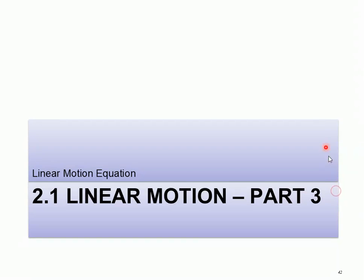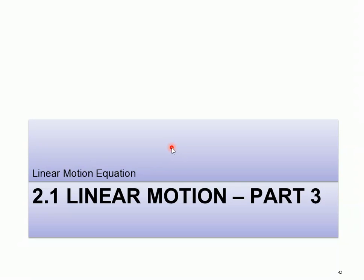Hi everyone, Puan Leong here. We are going to go to the last part of linear motion today, and that is the linear motion equation. Previously we've talked about linear motion, distance and displacement, speed and velocity, acceleration, and in part 2 we learned about ticker tape and ticker timer. So finally this part is about linear motion equations — you have to memorize the four equations, and I'm going to tell you where they come from and how to use them.